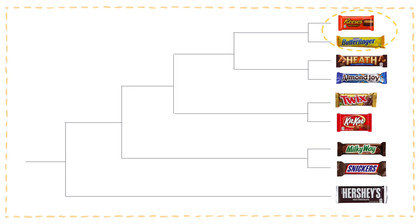Lastly, Reese's and Butterfinger are in the same OTU and both contain peanut butter. Reese's bars contain a more creamy peanut butter, while Butterfinger contains crunchy peanut butter. From the order of our tree, we can tell that Reese's and Butterfinger diverged the most recently.